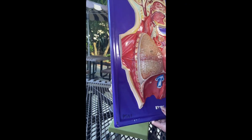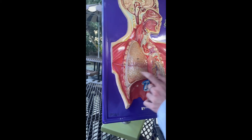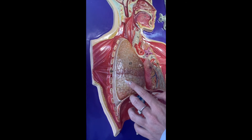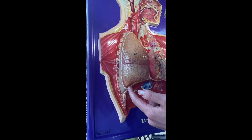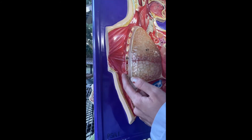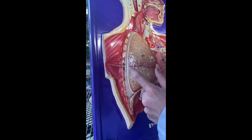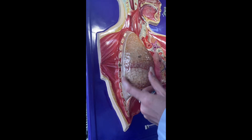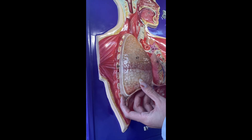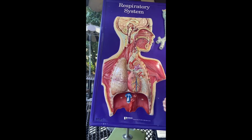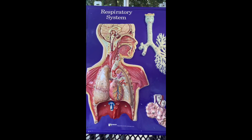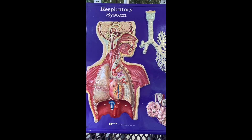Now we're going to show you a different model which explains the different layers. Right over here we have the visceral pleura, then we have the pleural cavity, and then we have the pulmonary cavity that's between the visceral and the pulmonary pleura. That's about it — I hope you guys learned all this correctly and I hope to help you pass your test.